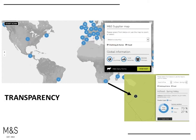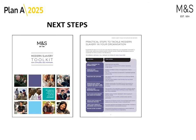We think transparency is absolutely vital in moving the dial on this. We've published a supply chain map illustrating what our first-tier suppliers are, and we really welcome seeing other competitors doing the same thing, because that will help drive even more collaborative action. In terms of next steps, our real focus is on responsible recruitment and ensuring no worker pays a fee for a job — really moving the dial on helping people get below the surface, understand where the risks are, and form effective plans to mitigate them.